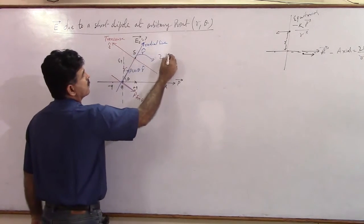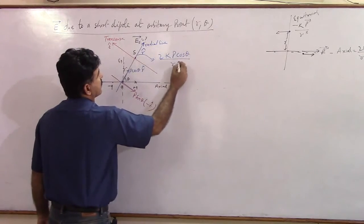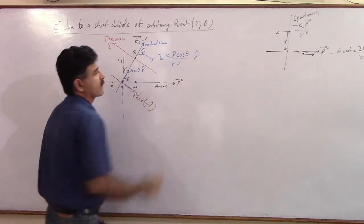That will be 2K P cos theta by R cube in which direction? R cap.